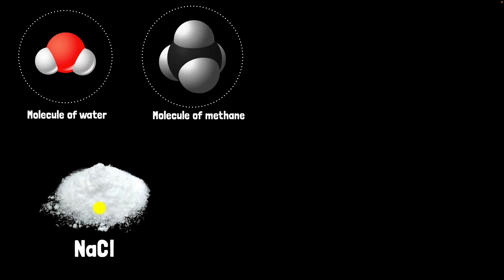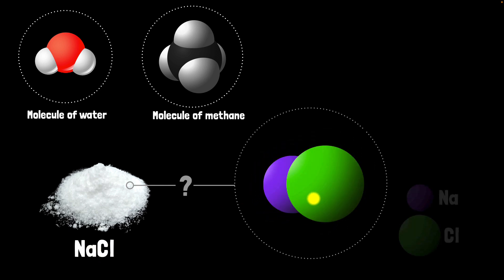So the big question now is what would you get if you were to zoom into table salt, which is NaCl? Well, our guess could be we will find molecules of NaCl, where one Na is attached to one Cl. Trillions and trillions of them, right? Wrong. That's not what we would get. We'll get something completely different. But what? Well, let's find out.